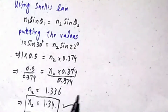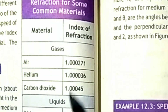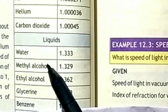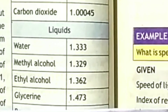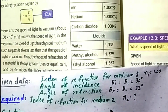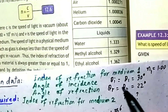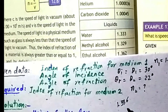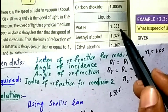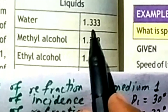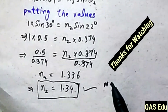The result is N2 ≈ 1.336, rounding up to 1.34. This is the refractive index for medium 2. Comparing with the table of refractive indexes: water is 1.333, methyl alcohol is 1.329, ethyl alcohol is 1.362. Our value of 1.336 is closest to water (1.333), so the second medium is most probably water.